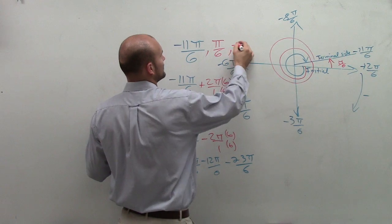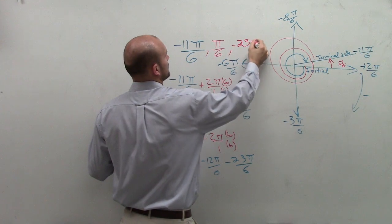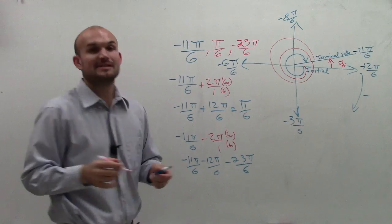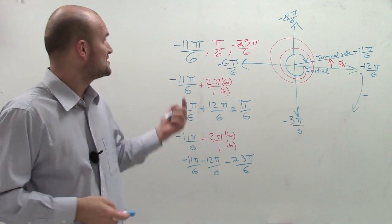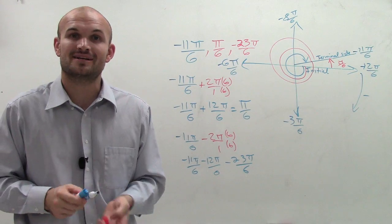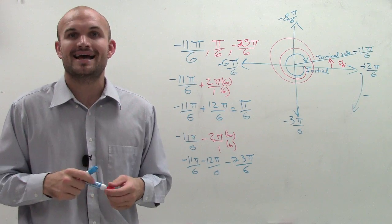So those are going to be my two coterminal angles, one being positive and one being negative. So I hope this helps. Please let me know if you have any questions. Subscribe down below. And thanks again for watching.